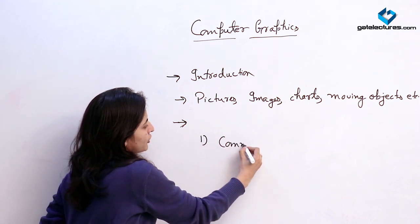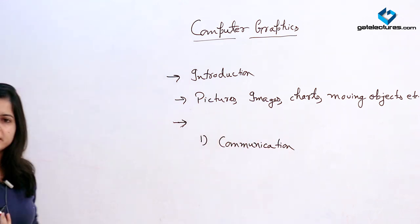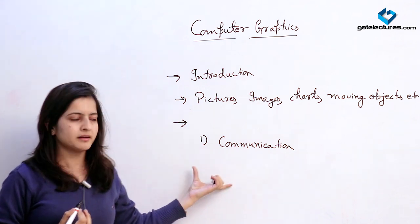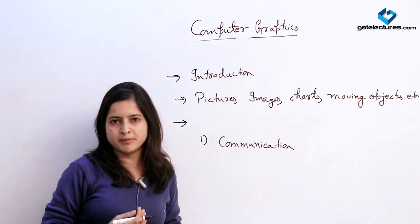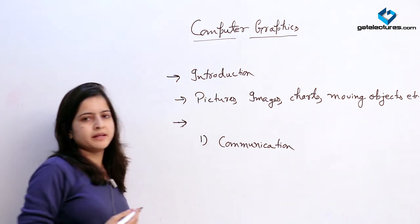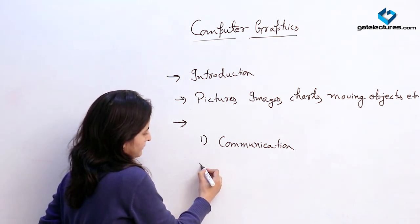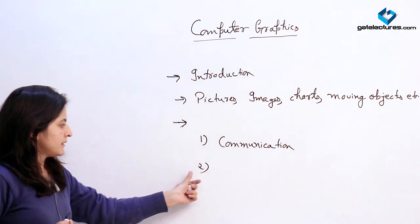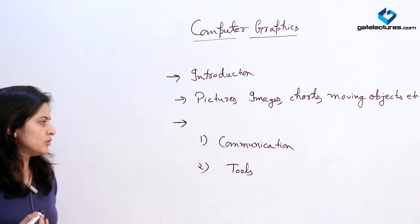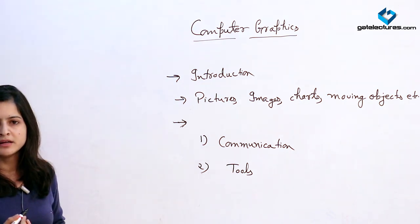First, we will see why we are using computer graphics and what are the interactive tools which computer graphics is providing us. The first and most important is communication. Computer graphics generally deals with pictures and images and it is a part of communication between a user and a computer. For the interaction purpose between a computer and a user, we are using some medium which is pictures or it can be a moving object like animation. Secondly, computer graphics provides us tools to store these images, represent them, and use them for further communication purposes.